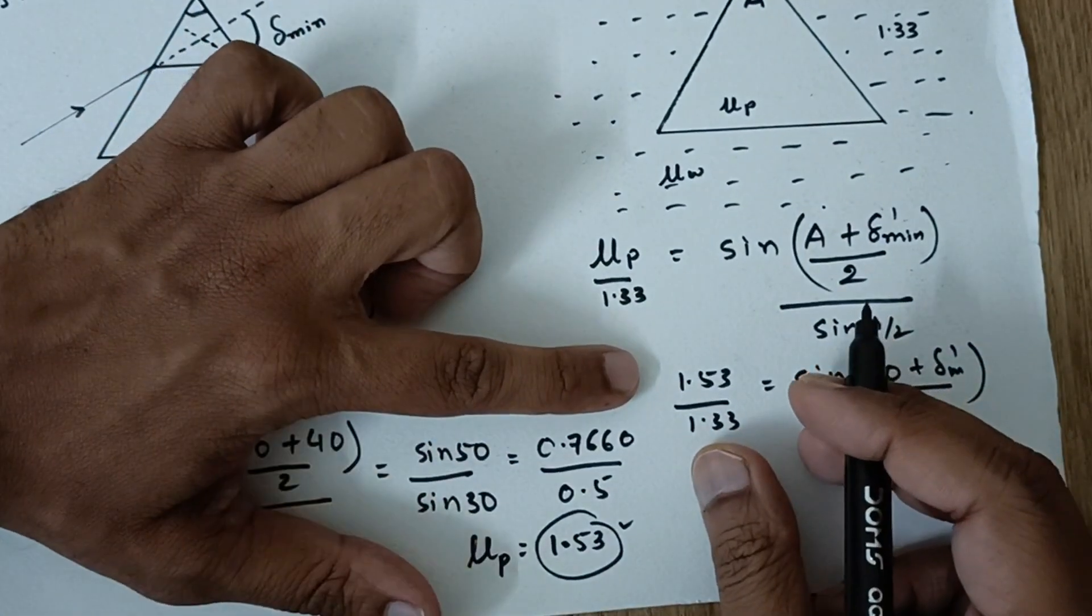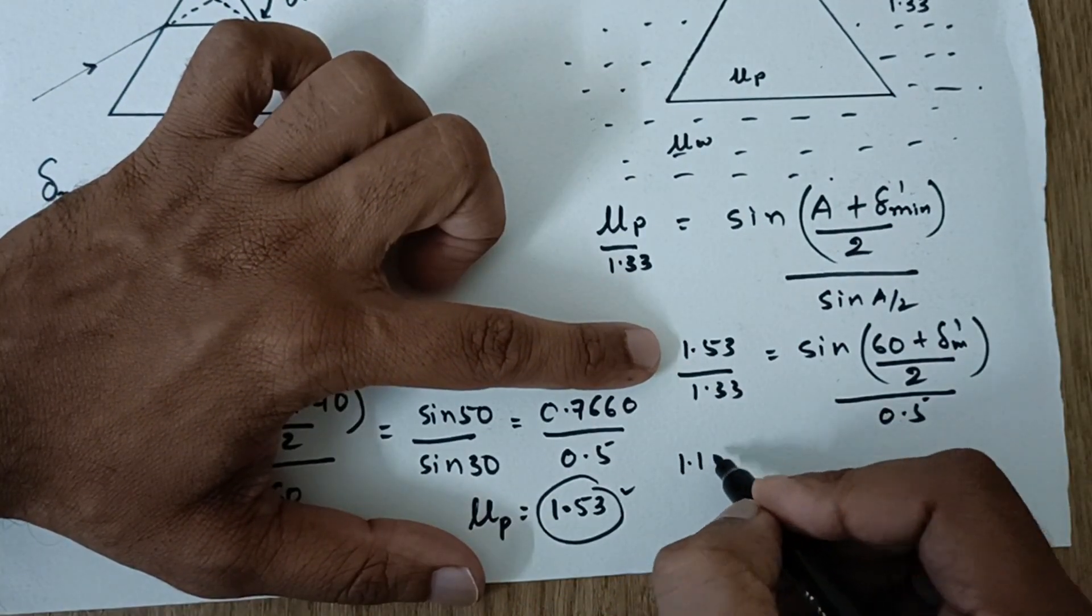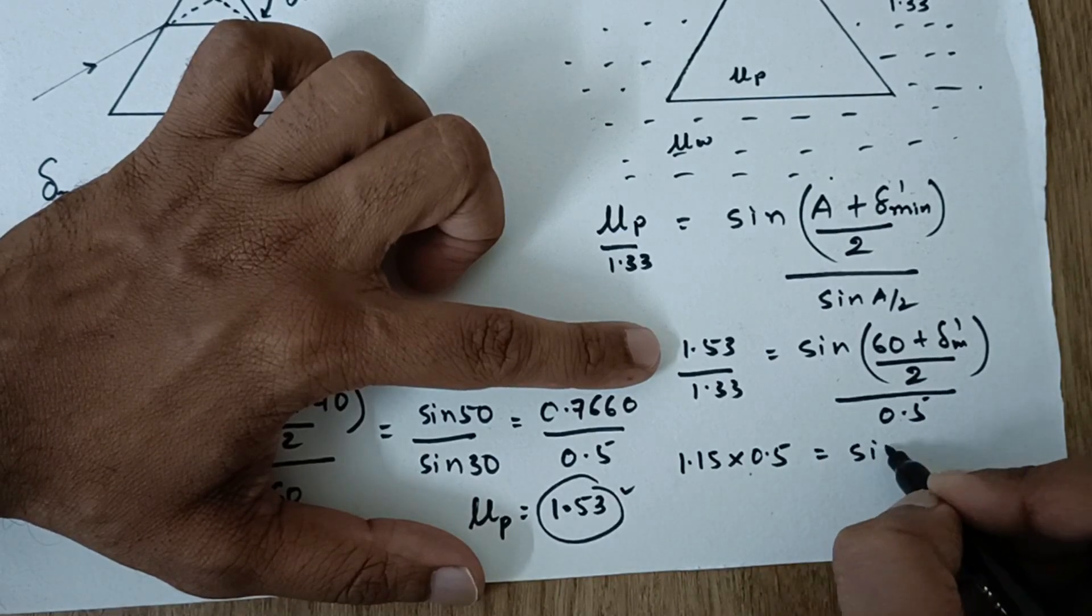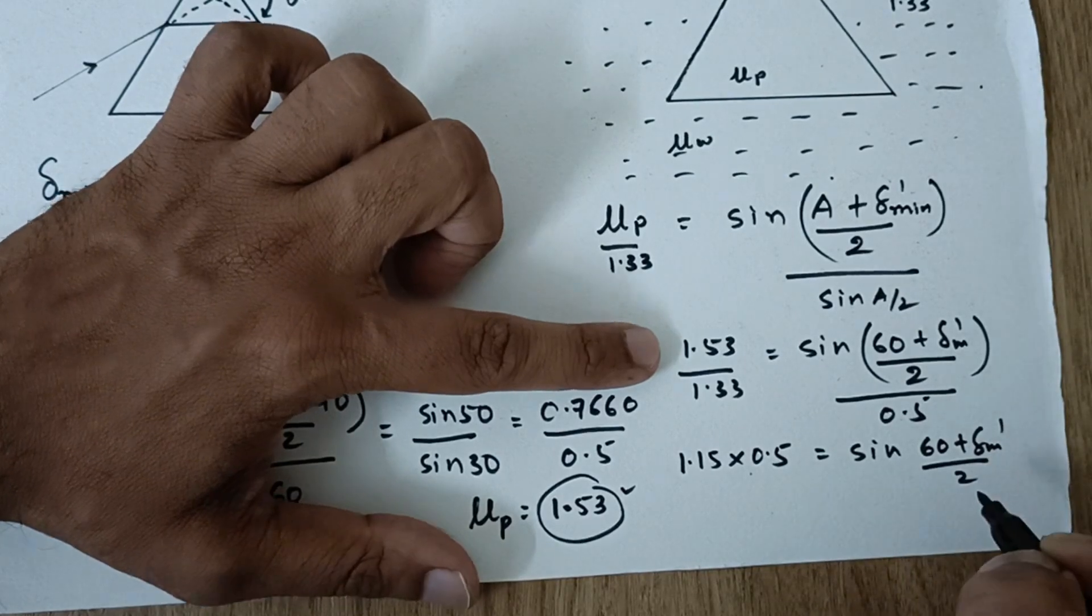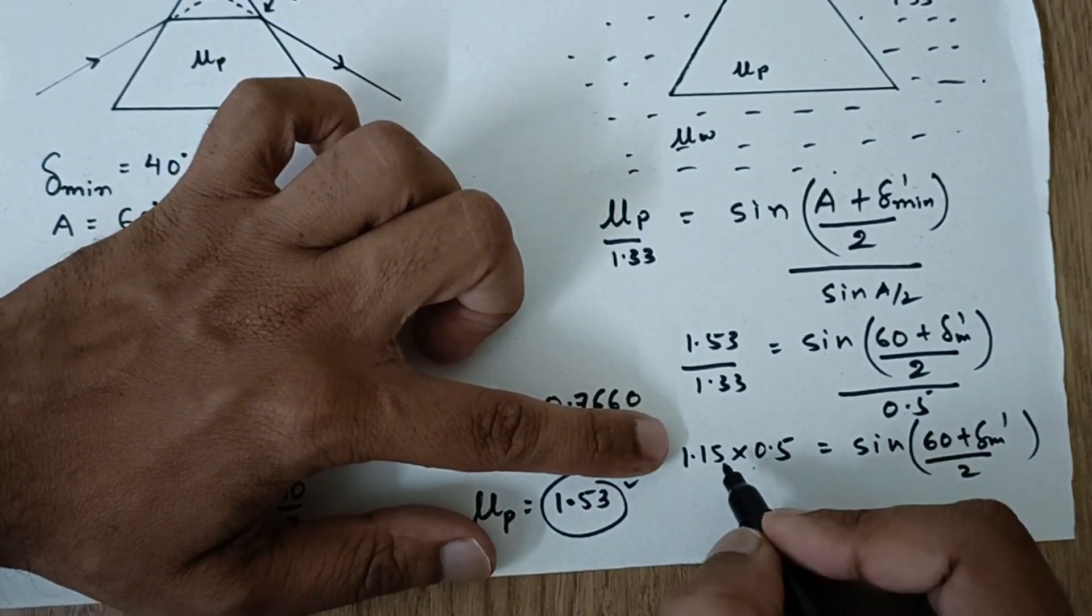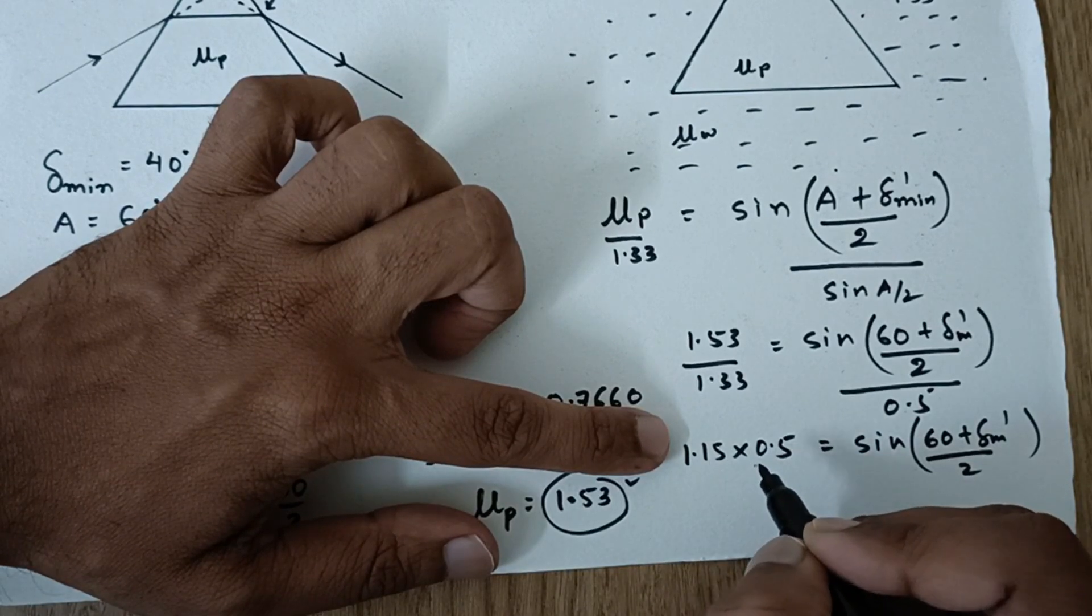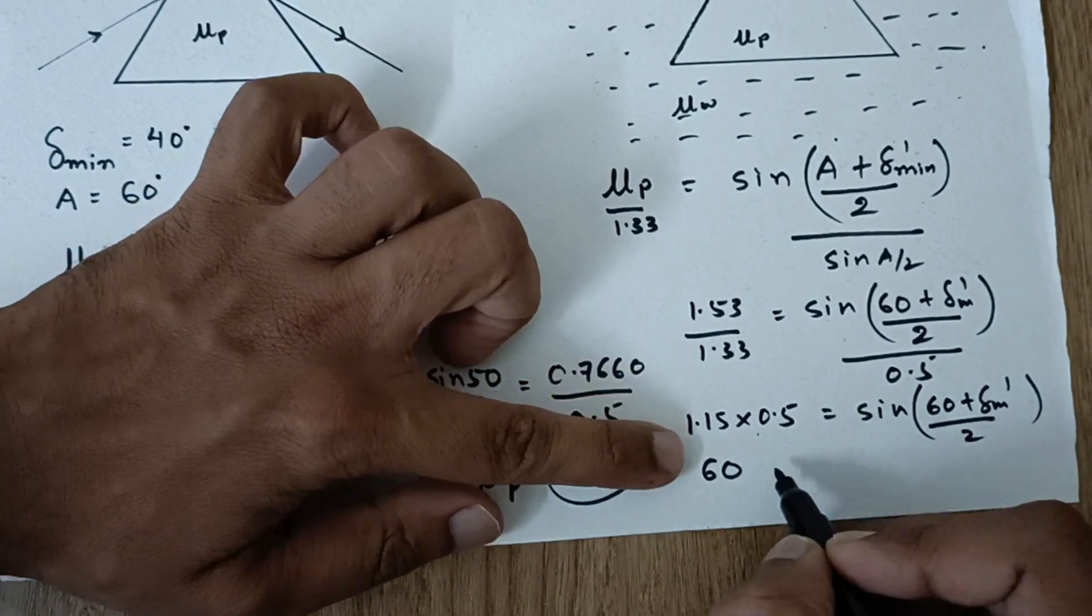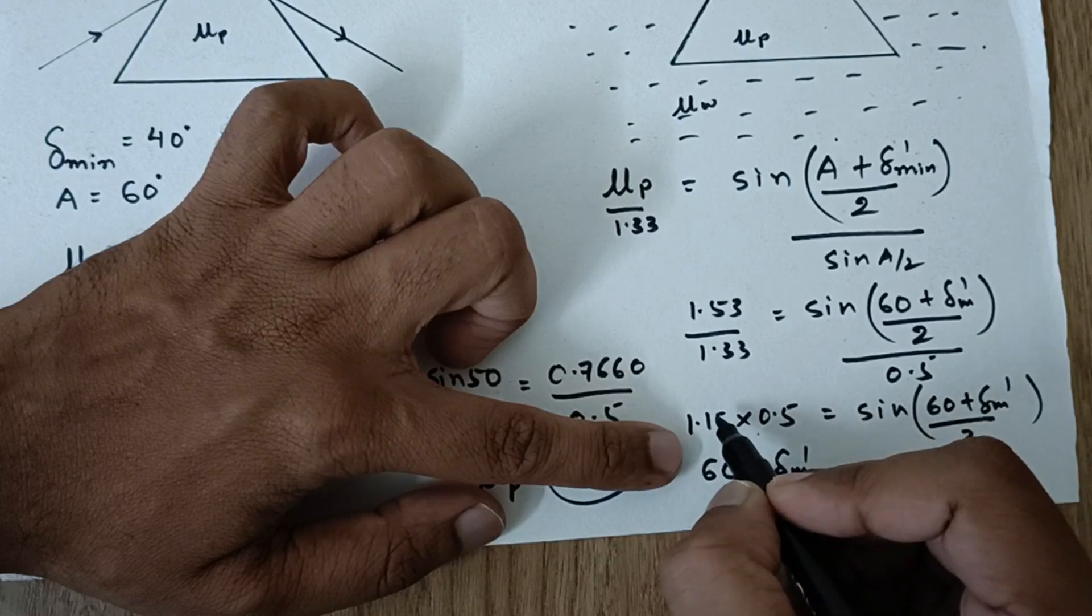Now I will take it over this side and we are going to solve this. So now this is 1.15 into 0.5, that is equal to sin 60 plus delta M dash by 2. Now I will find the sin inverse of this part which is 0.5750. So your answer will be let us solve this plus delta M dash by 2.